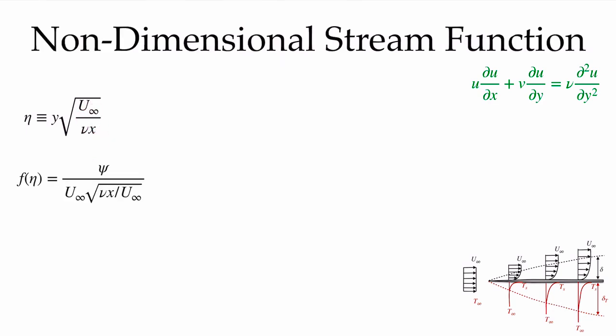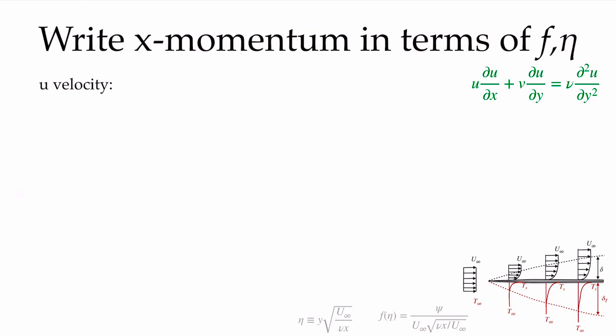We start the process by defining a non-dimensional stream function. We say there's some function f of our similarity parameter eta, which is a scaled version of y, representing our non-dimensionalized stream function. This grouping will non-dimensionalize the stream function. What we want to do next, once we have these definitions, is express the x-momentum equation in terms of our new non-dimensional stream function as a function of the similarity parameter. This is a little tedious — I'll leave the steps here for those interested in the derivation.